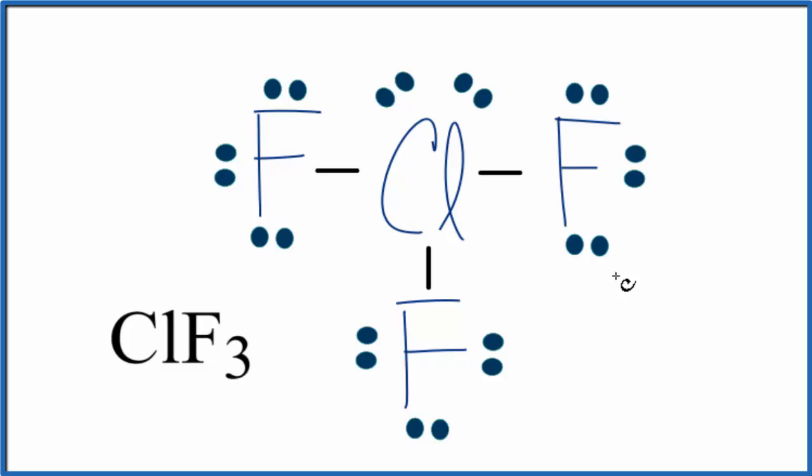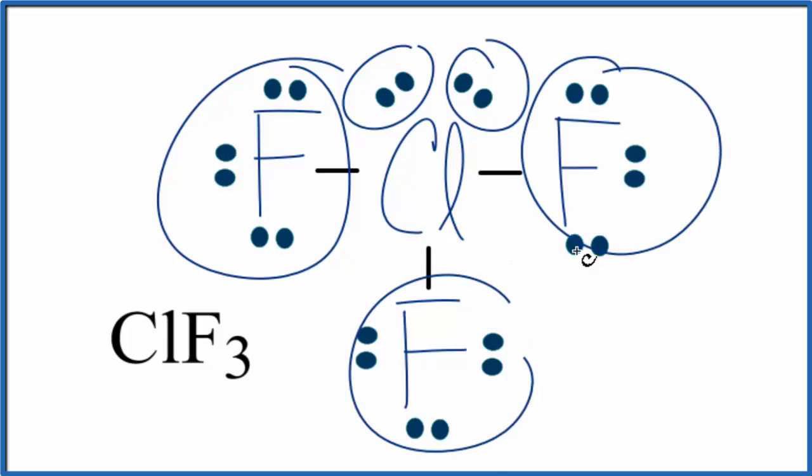So we have our Lewis structure, and we can imagine that each one of these things attached to the chlorine is going to push away from all the other things. It's going to spread out, that'll give us our molecular geometry. So let's try to visualize that.